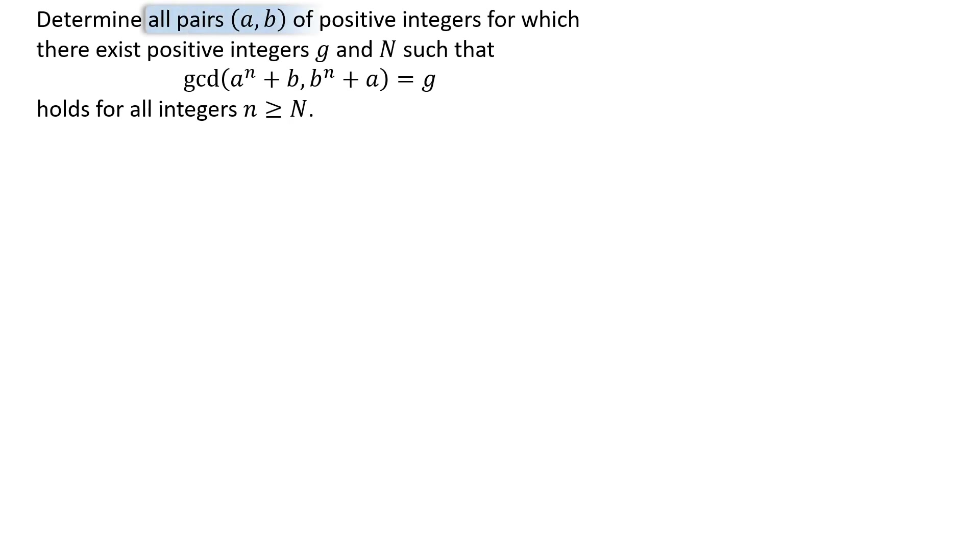We need to find pairs of positive integers a and b such that the greatest common divisor for the expressions a to the n plus b and b to the n plus a stays the same for all values of n beyond a certain point.